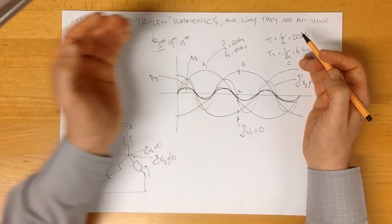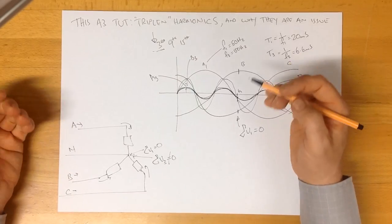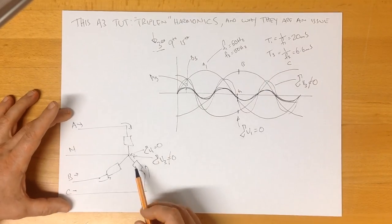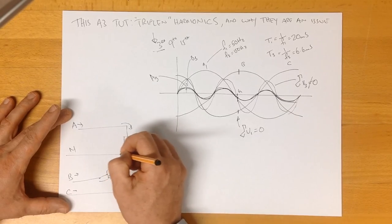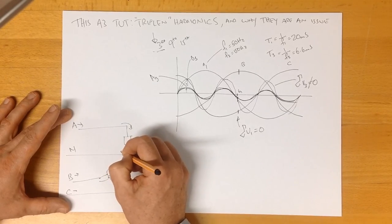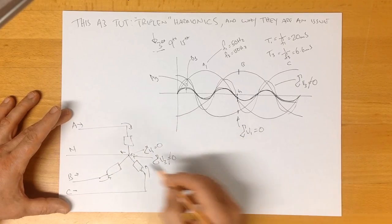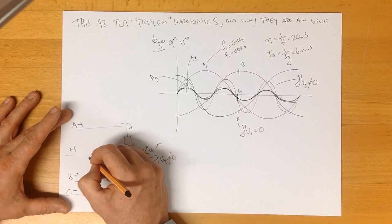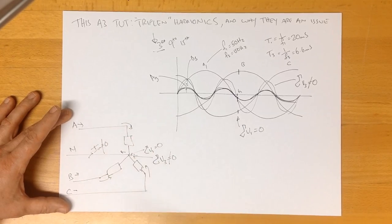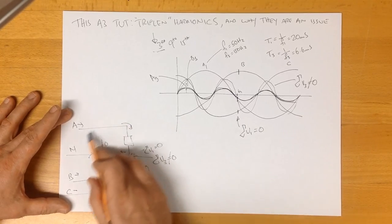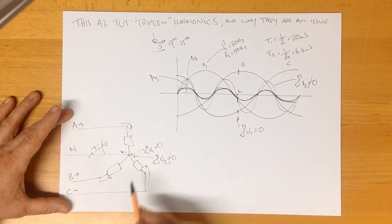That's what we've shown and what we've proved. Now this is a problem in a star system because the only way of maintaining this is to have these triplen currents flowing out in the neutral wire. Which means our neutral current is not zero. This is why triplens are a real problem in a star system.